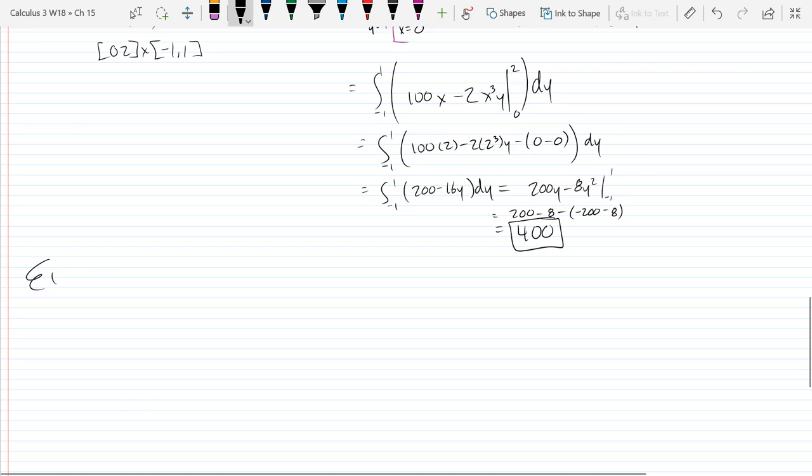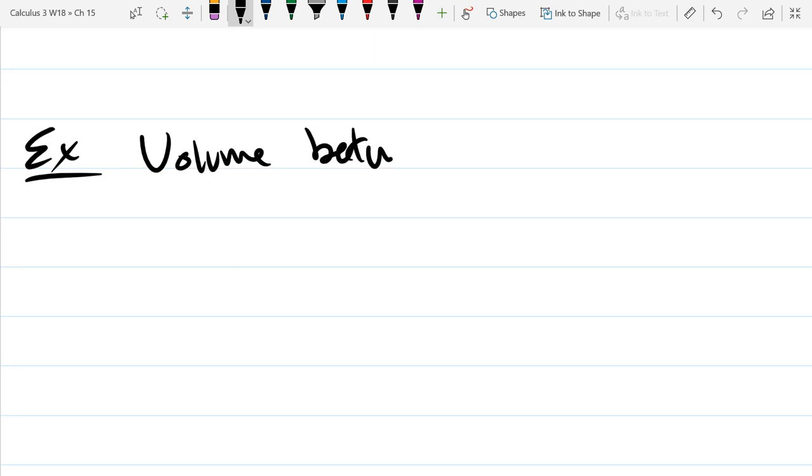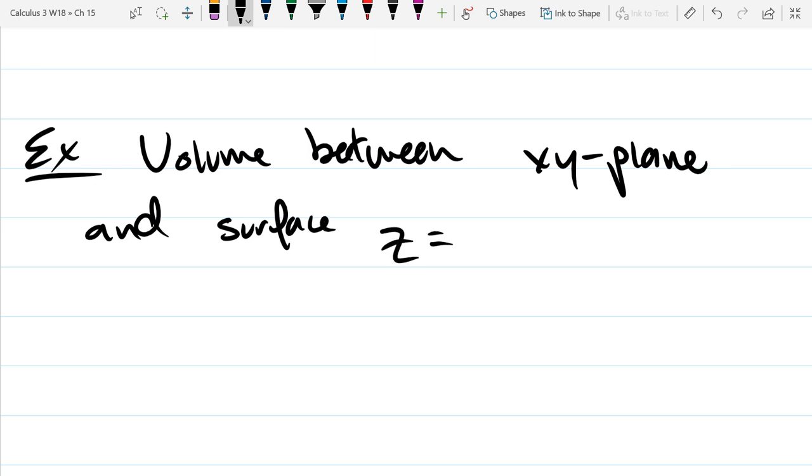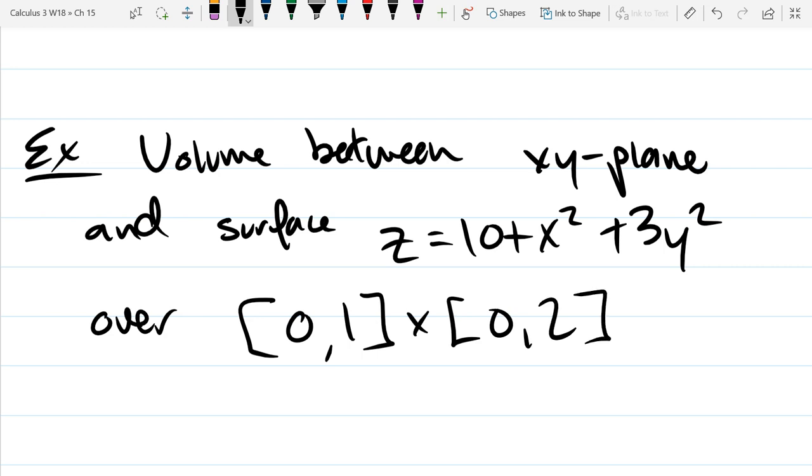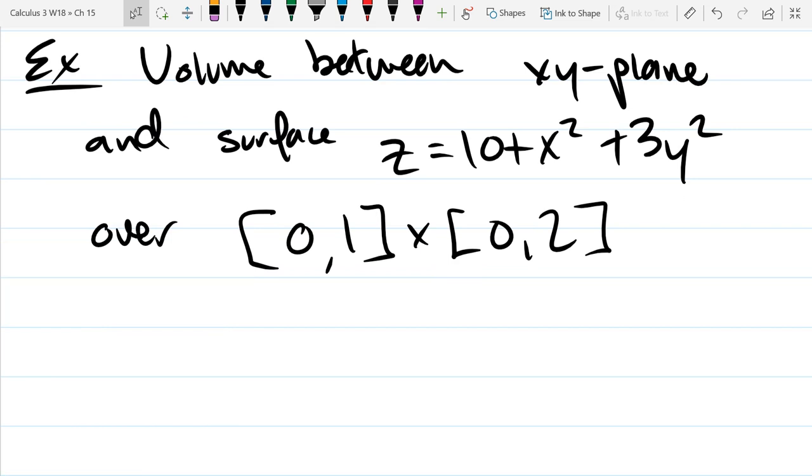Alright, last problem in this section. Do a proper zoom... So volume between XY plane and surface Z equals 10 plus x squared plus 3y squared. The only type of region we can do now are rectangles, so this will be over the rectangle 0,1 cross 0,2. I think I've taught you enough to do this problem on your own, so I'll just quietly do it.